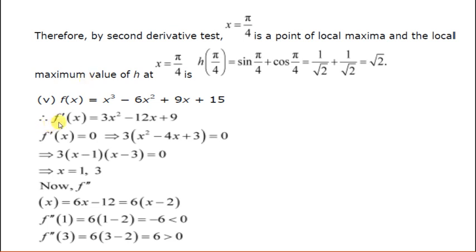Now find f''(x). This becomes 6x - 12, or 6(x - 2). Now find the value of this double derivative at both points. f''(1) = -6, which is less than 0, meaning x = 1 is a point of maxima. f''(3) = 6, which is positive, meaning x = 3 is a point of local minima.